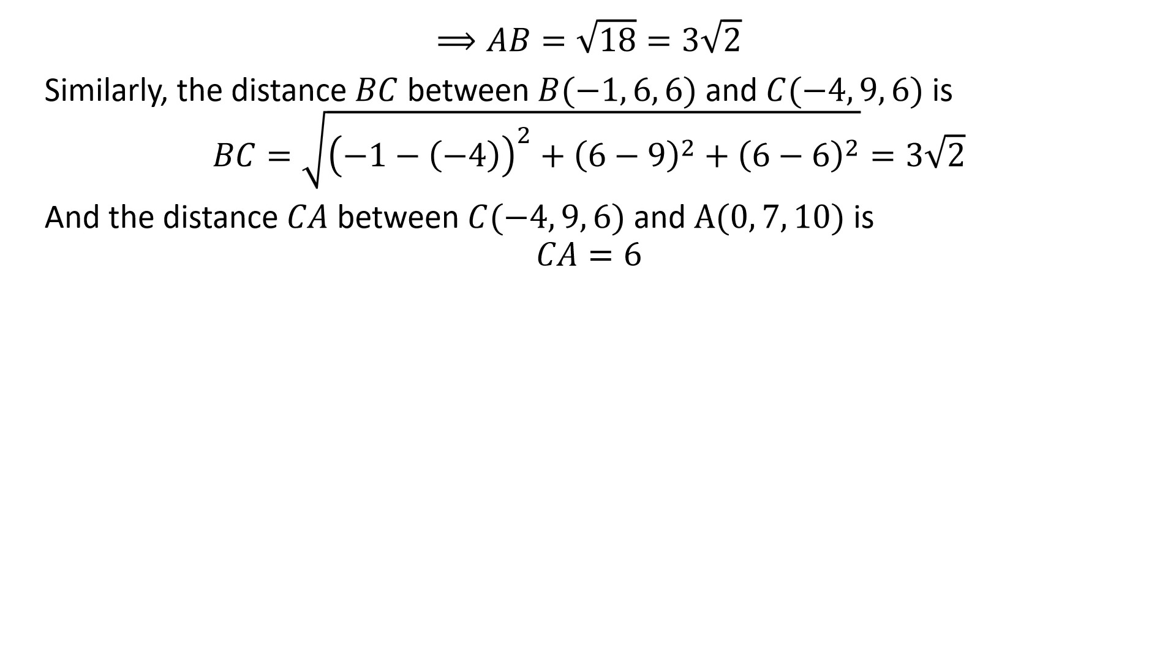Similarly, the distance CA is equal to 6. We can see AB² plus BC² is equal to CA². As per the Pythagorean theorem, the vertices A, B, and C form a right angled triangle.